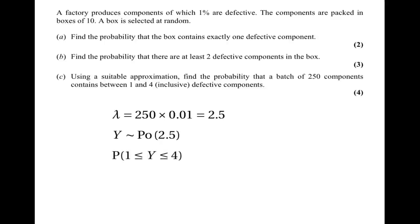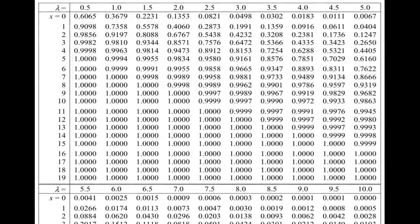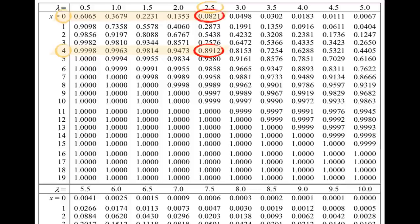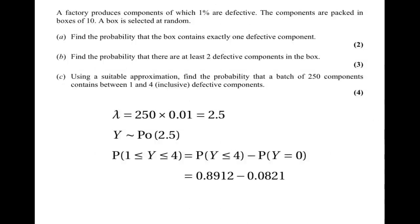We need the probability that Y is between 1 and 4 inclusive, which equals P(Y ≤ 4) minus P(Y = 0). Using the tables for lambda equals 2.5, we find P(Y ≤ 4) = 0.8912 and P(Y = 0) = 0.0821. So the answer is 0.8912 minus 0.0821, giving 0.8091 to four decimal places.